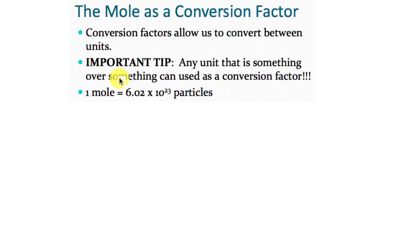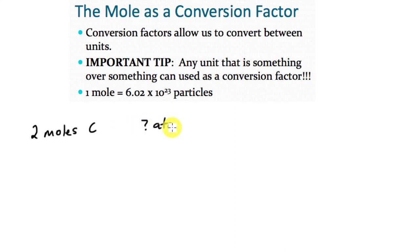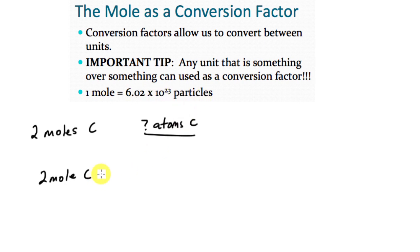Those are the types of particles: elements (atoms), molecular compounds (molecules), ionic compounds (formula units), and ions. Now the last thing here is what we do with this unit — it's called the unit equality, and it allows us to create conversion factors. A conversion factor is any unit expressed as something per something else. It allows us to make conversions and predictions. For example: if I have two moles of carbon, how many atoms of carbon do I have?